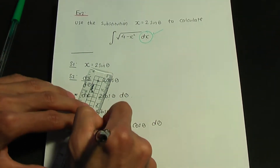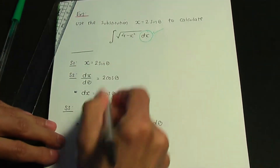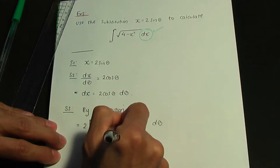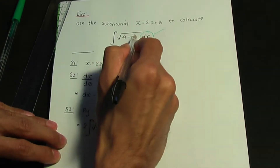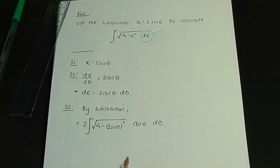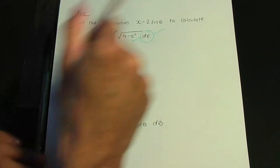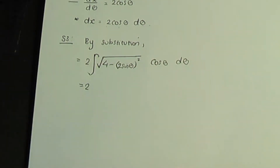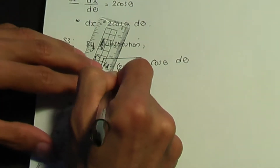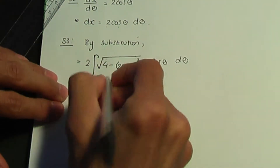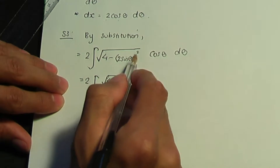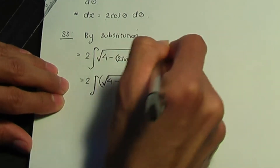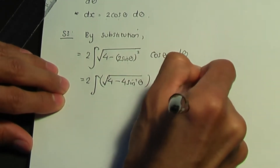So dx has been replaced. We're left with the root of 4 minus x squared, where x is 2 sin theta — so we have 2 sin theta squared inside the root. Don't forget to square. So x has been replaced too. Simplifying, we have 2 into the integral of the root of 4 minus 4 sin squared theta, times cos theta d theta.